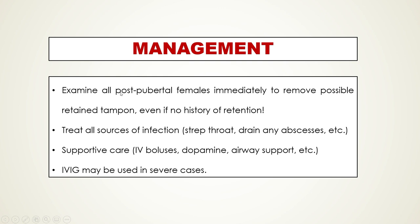What is critical in these patients is that we must examine all post-pubertal females immediately and remove any possible retained tampon — even if there is no history of one, it absolutely happens that young women can forget or the tampon can migrate further. Always perform a complete vaginal exam on all post-pubertal females presenting with toxic shock syndrome. It is important to treat all sources of infection: treat strep throat, drain any abscesses, because if you do not eliminate the bacteria causing toxic shock, the toxic shock will continue.